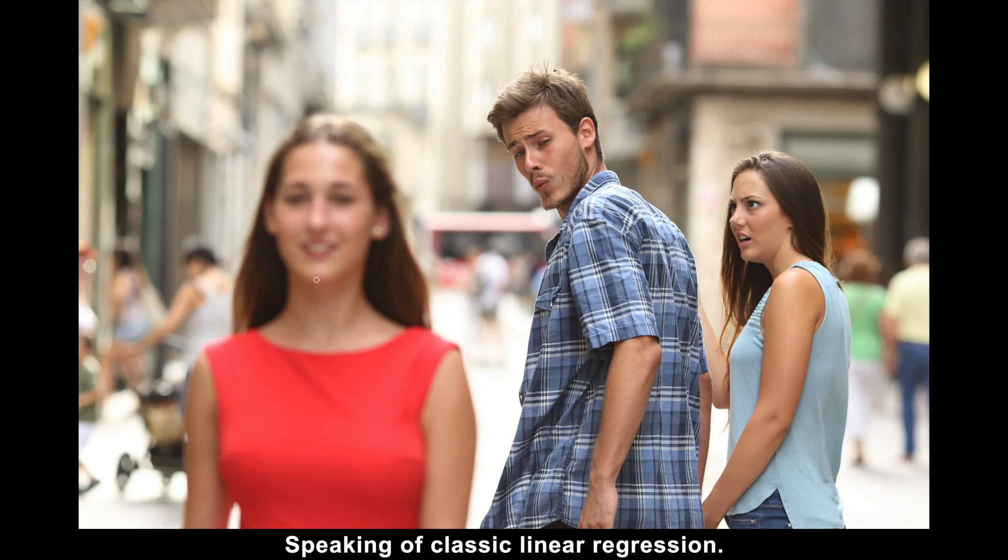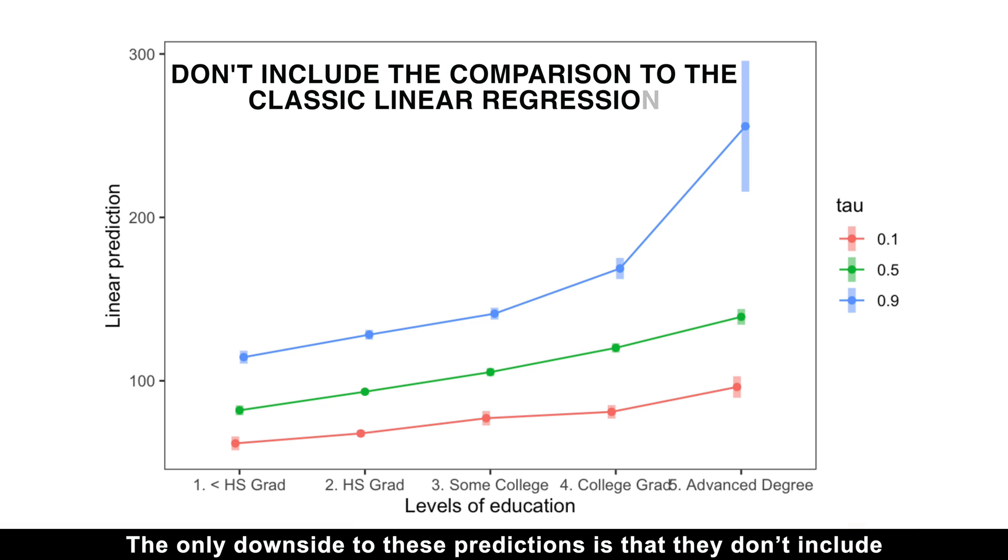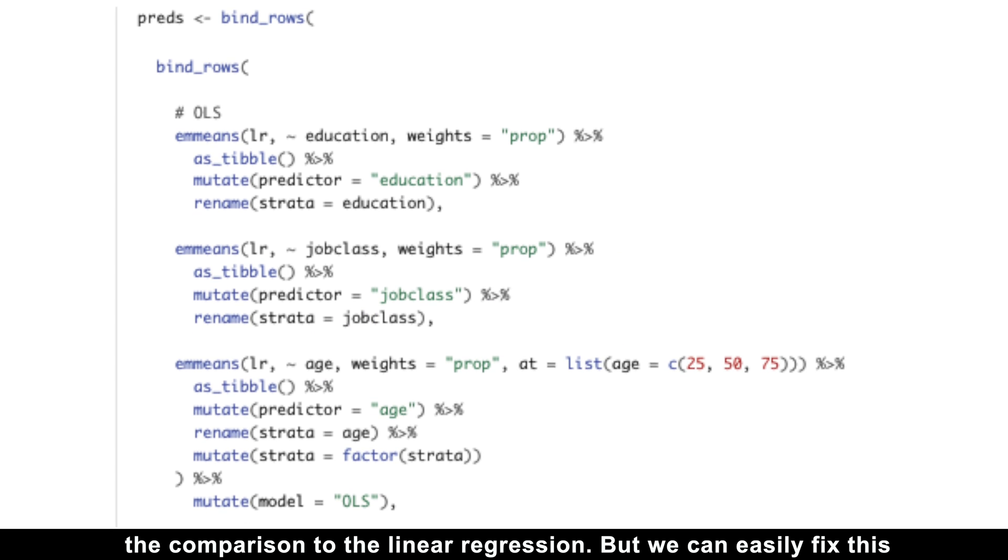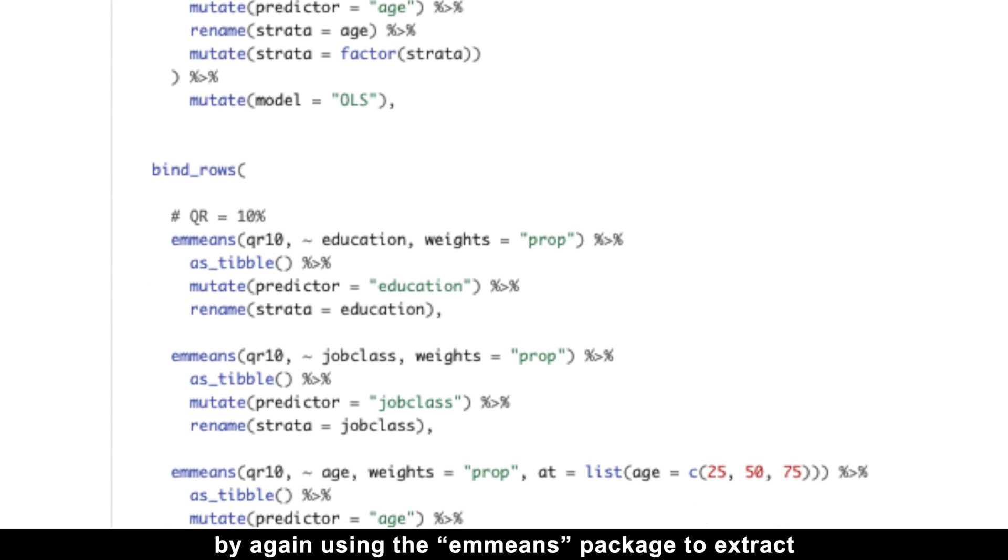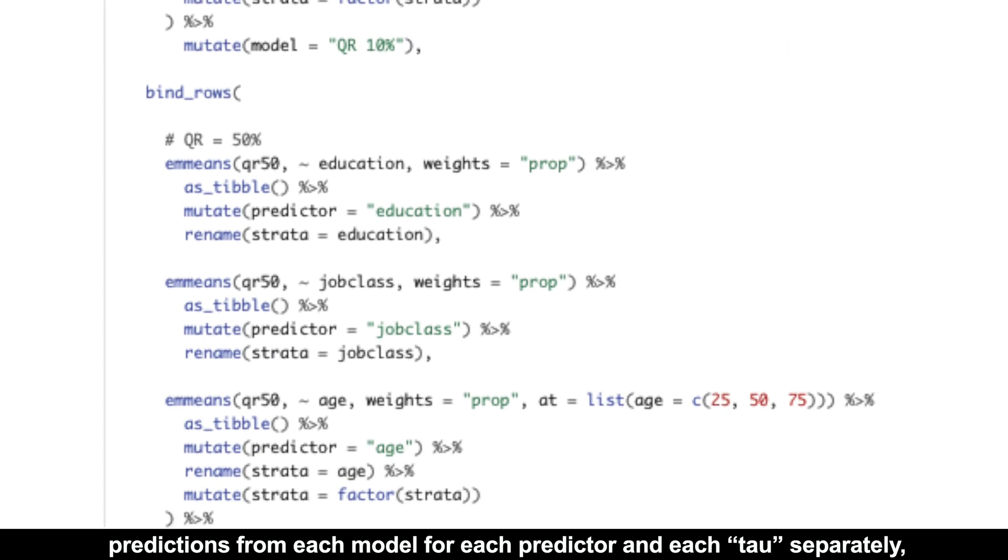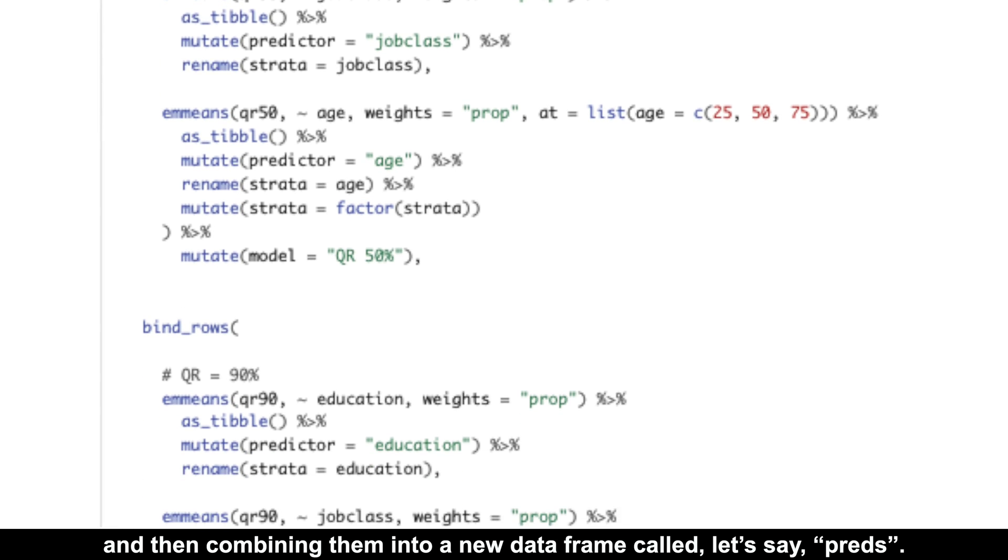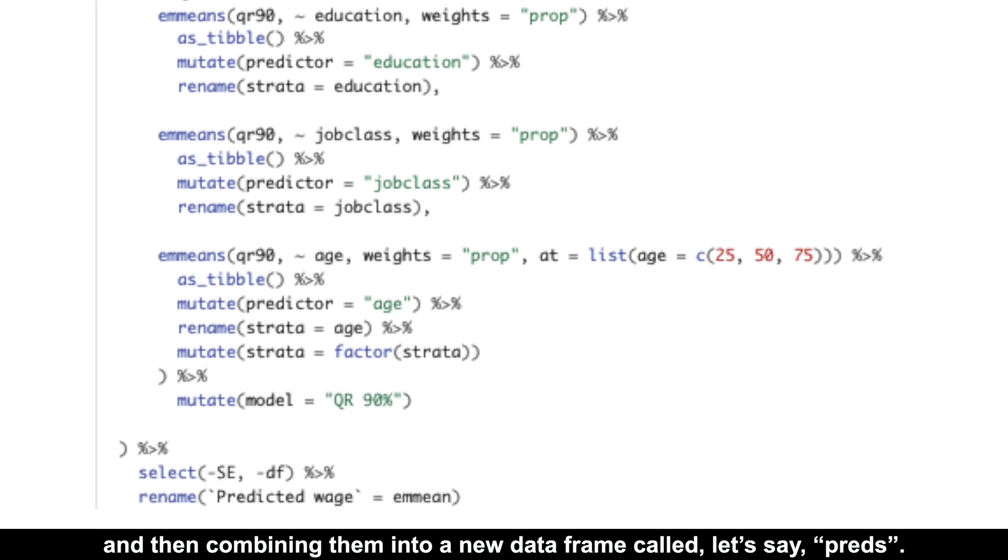Speaking of classic linear regression, the only downside to these predictions is that they don't include the comparison to the linear regression. But we can easily fix this by again using the emmeans package to extract predictions from each model for each predictor and each tau separately, and then combining them into a new data frame called, let's say, preds.